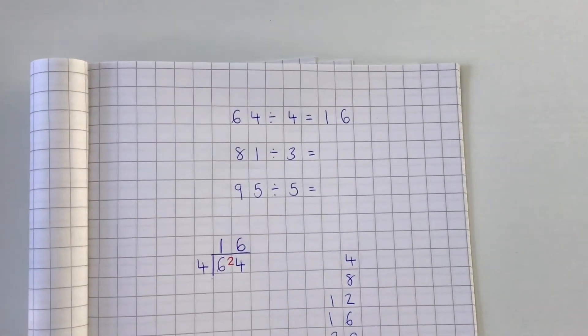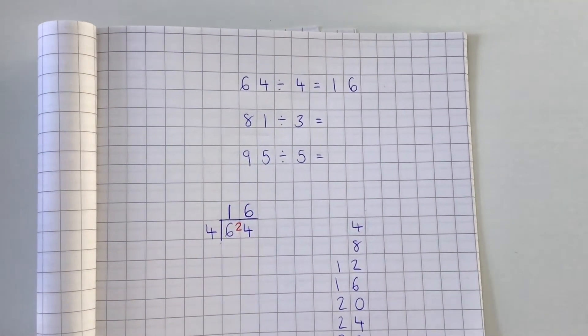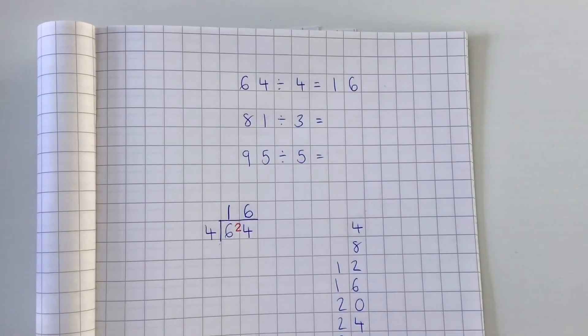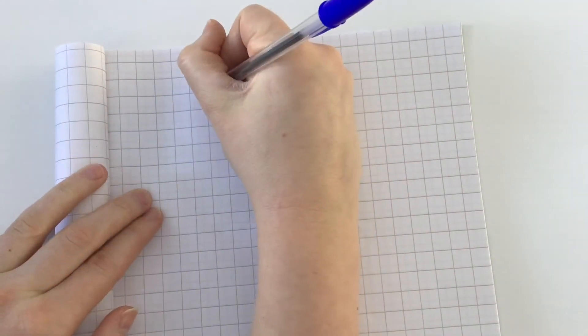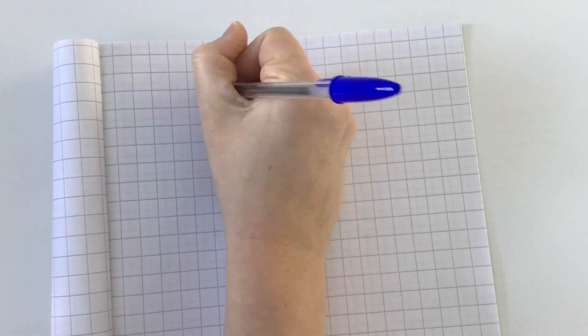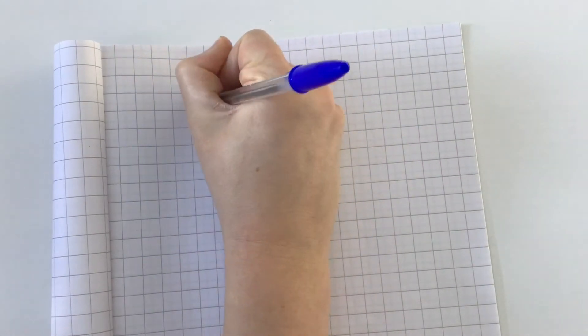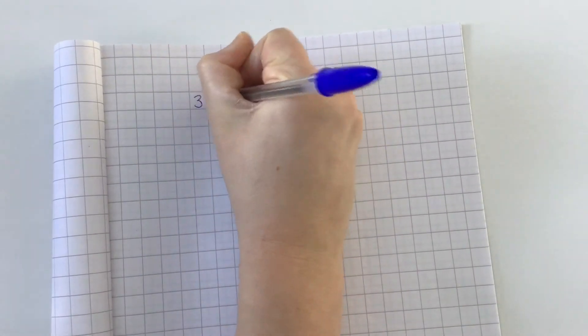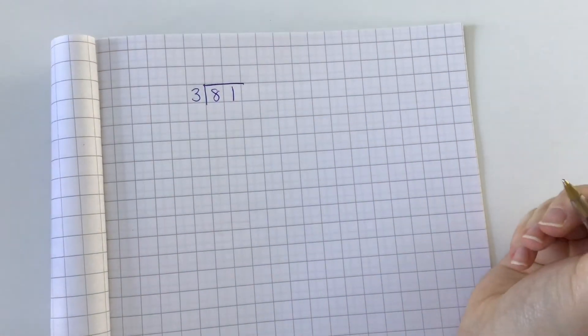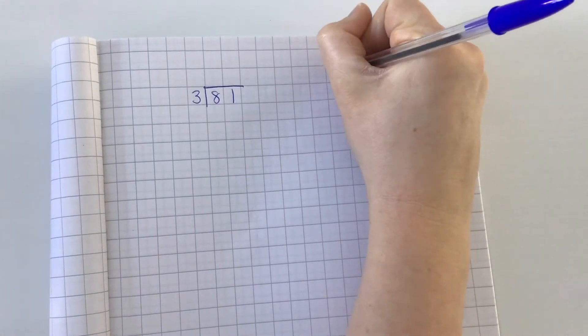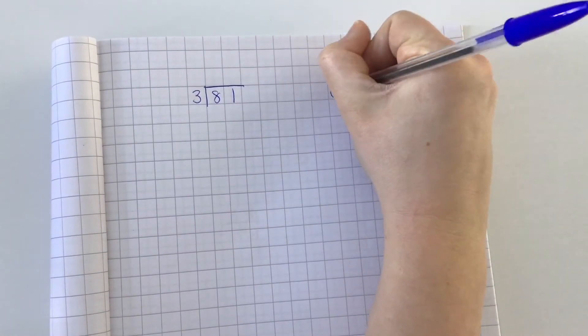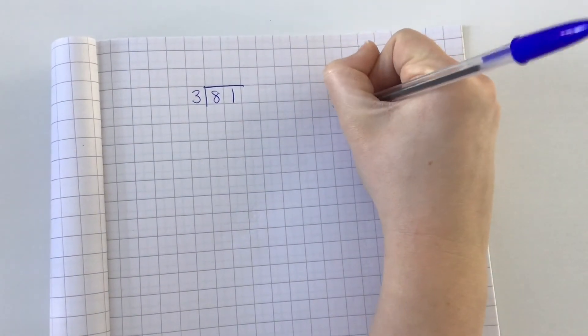Let's have a look at the next question: 81 divided by 3. Let's set up our short division for 81 divided by 3 and count up in threes down the side.